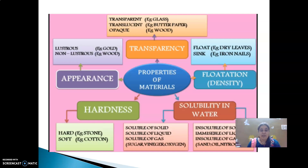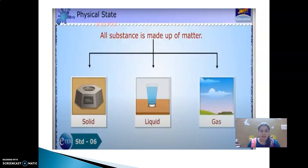Materials or substances can be classified on the basis of their properties. Here are some properties of materials: appearance, solubility in water, flotation, transparency and physical state. The first one is physical state. All materials or substances can be classified as solids, liquids and gases. For example, plastics, stones, common salt, wood, glass, steel, sand, ice etc. are solids. Whereas water, milk, oil, etc. are liquids. Nitrogen, oxygen, carbon dioxide, steam or water vapor etc. are gases. So from this we can easily classify various materials as solids, liquids or gases.